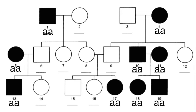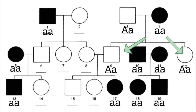Any cross that results in a homozygous recessive individual — like individuals 10 and 11 — must have parents who have at least one recessive allele. In the case of individual 3, that person would have to be heterozygous, with the recessive allele hiding but manifesting in the next generation. Furthermore, individuals 9 and 12 must be heterozygous. They have one dominant allele because they don't have the disease, but their mother, individual 4, was homozygous recessive and would have had to give that recessive allele to both individuals 9 and 12.